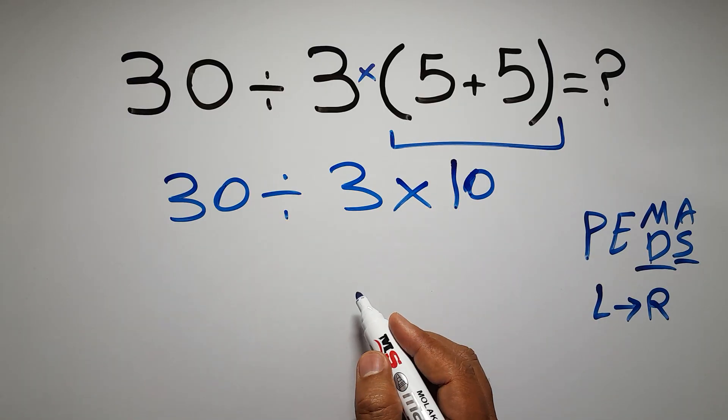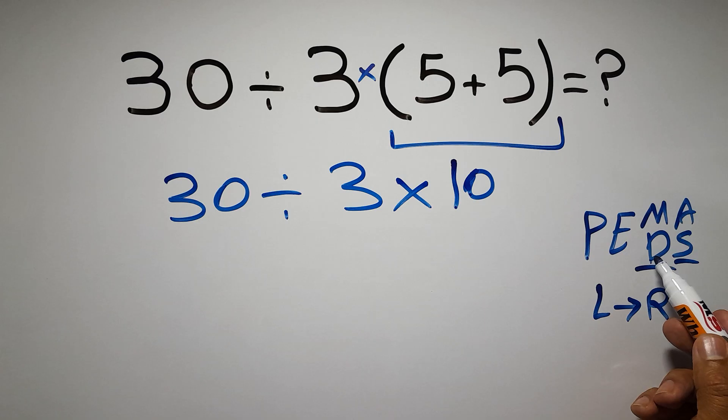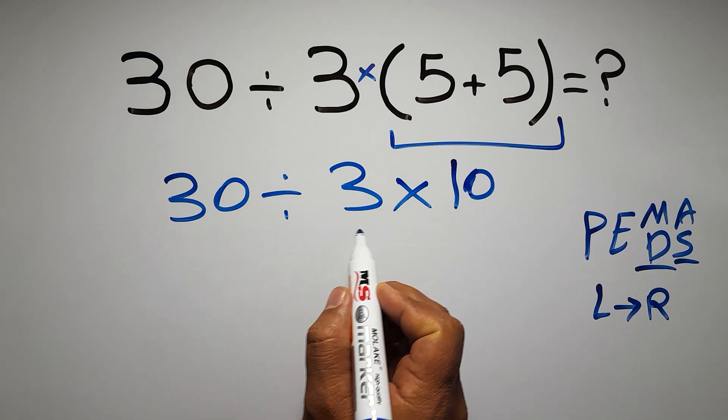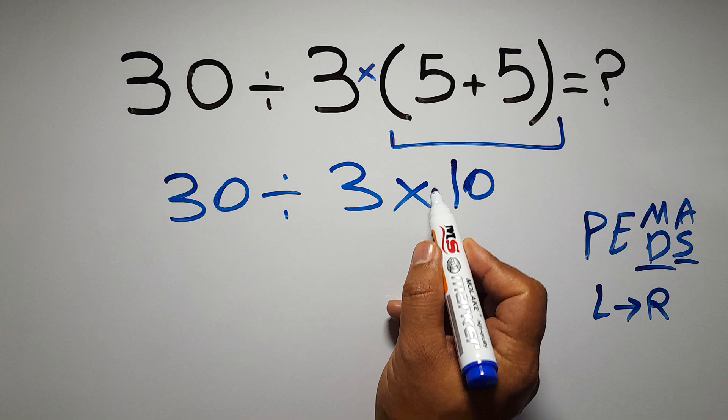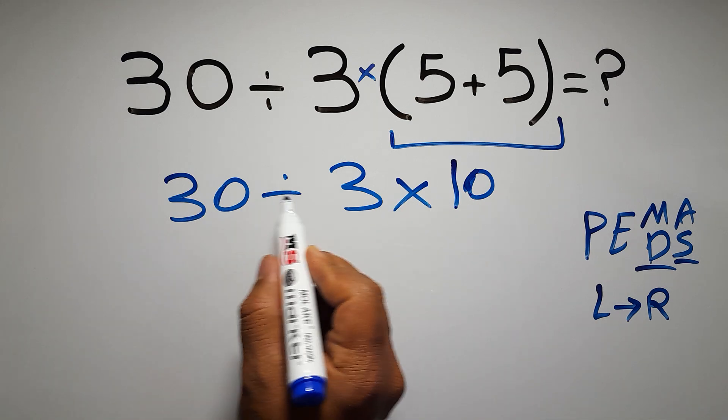Now we have one division and one multiplication. As I said, multiplication and division have equal priority and we have to work from left to right. So here first we have to do this division, then this multiplication. 30 divided by 3 is just 10.